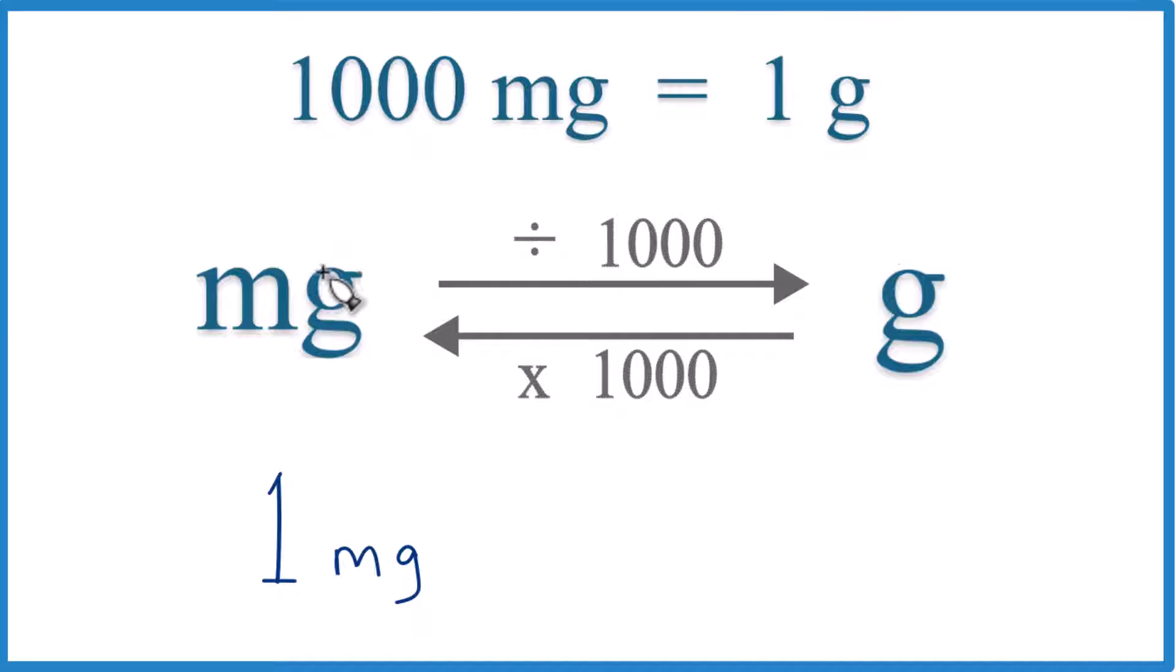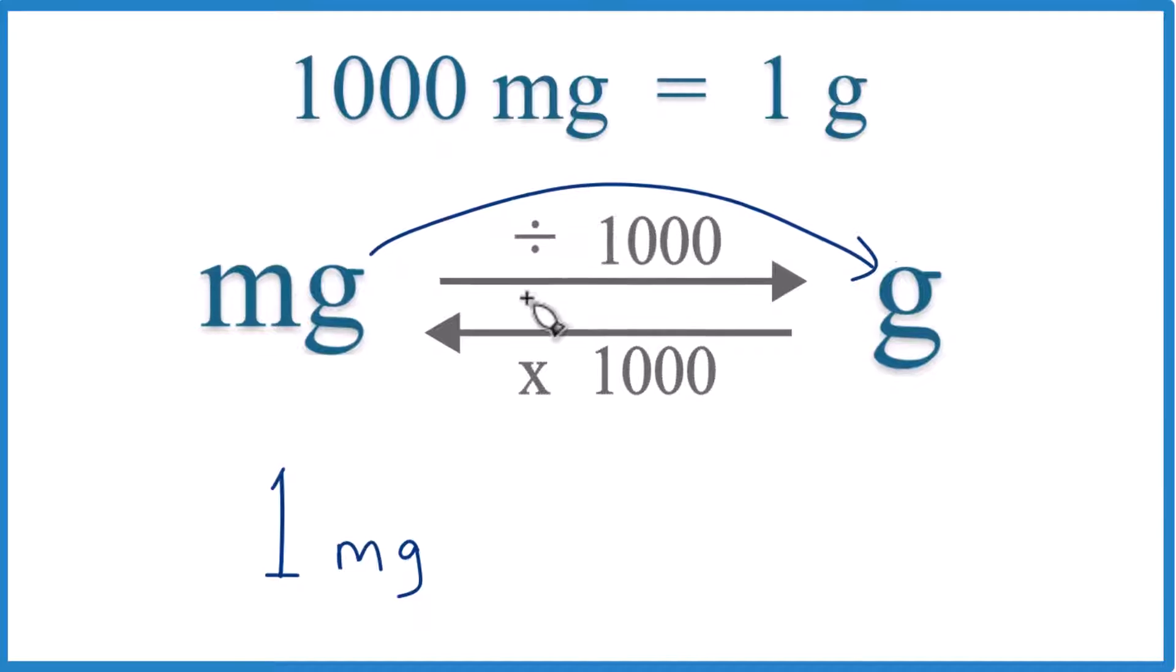So we need that when we're going from milligrams to grams or grams to milligrams. Here we have one milligram. We want to get that to grams, so we are going to divide by 1,000, like this.